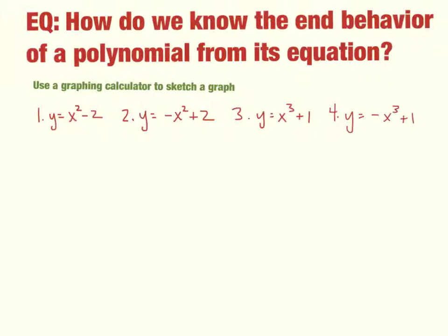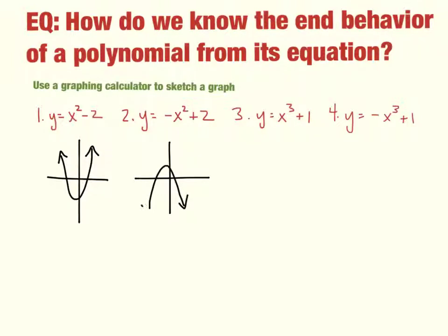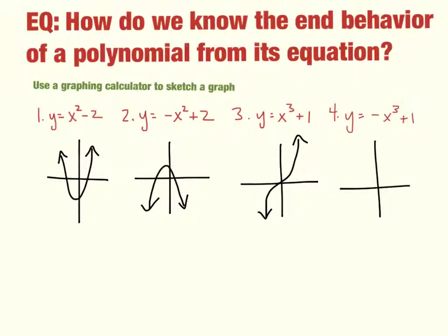If we look at y equals x squared minus 2, the sketch of this graph looks something like this, with the arrows both going up. Negative x squared plus 2, this sketch looks something like this. x cubed plus 1 will look like this, and negative x cubed plus 1 goes like this.